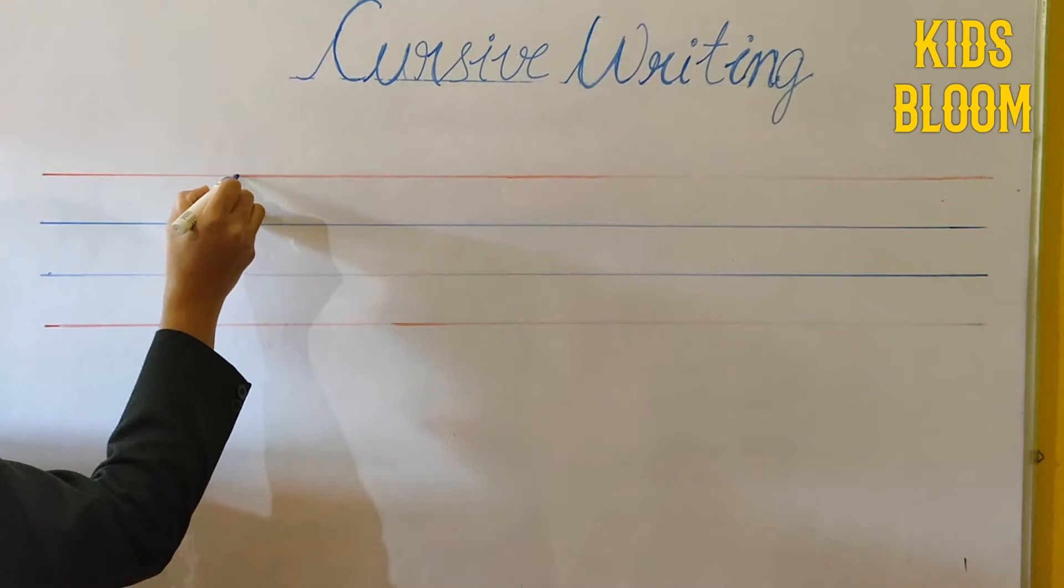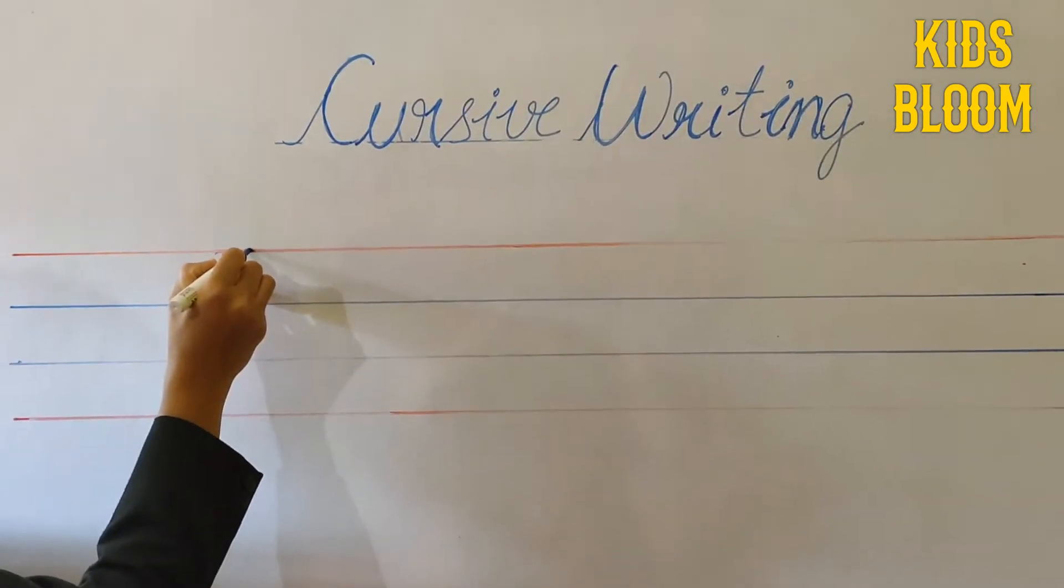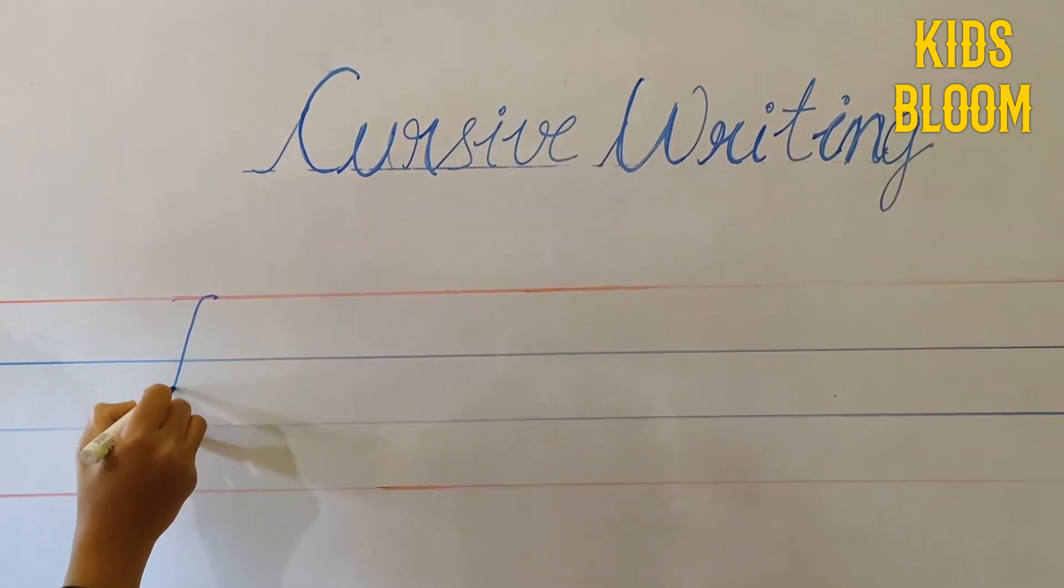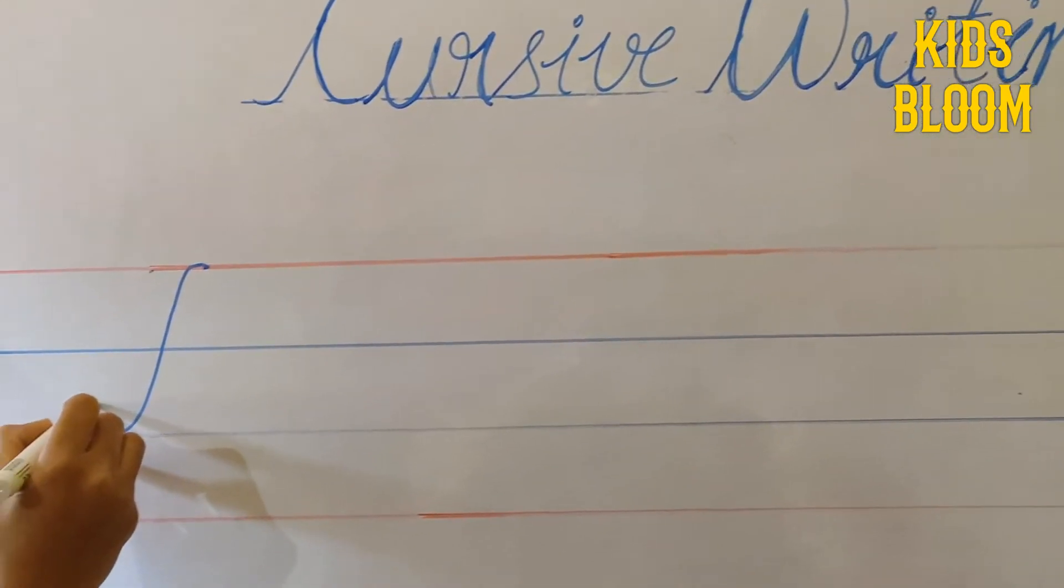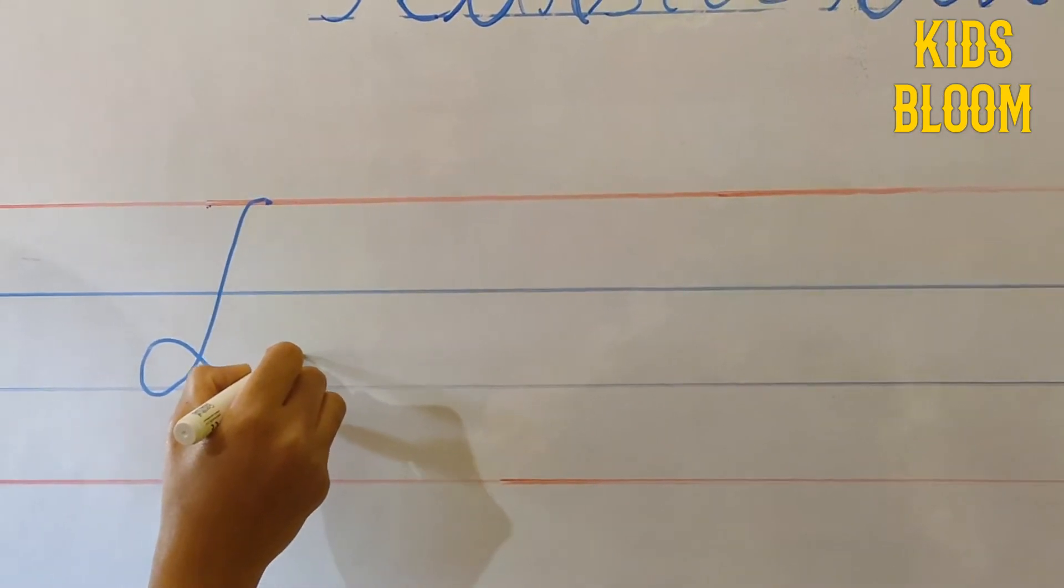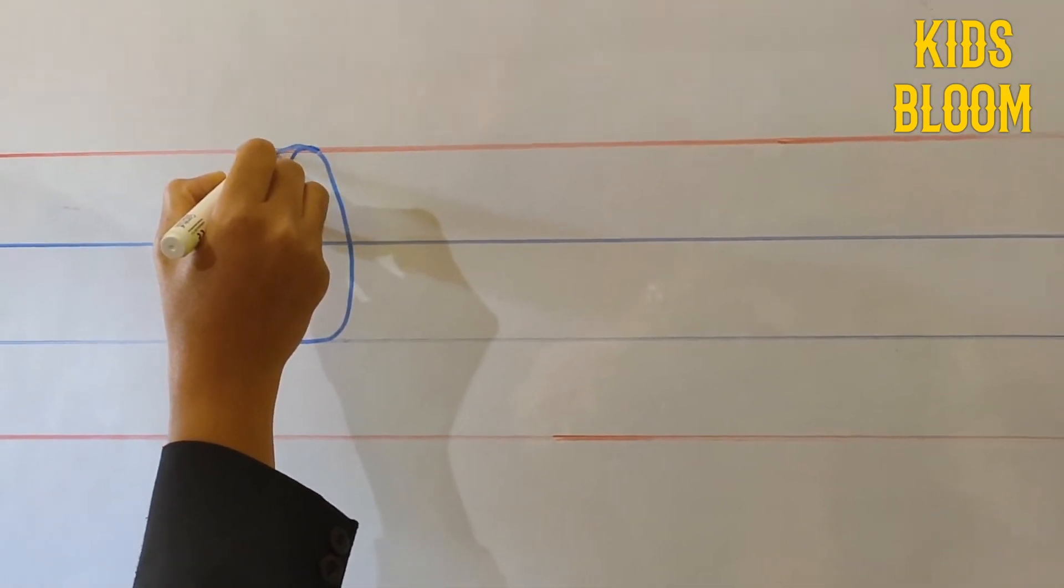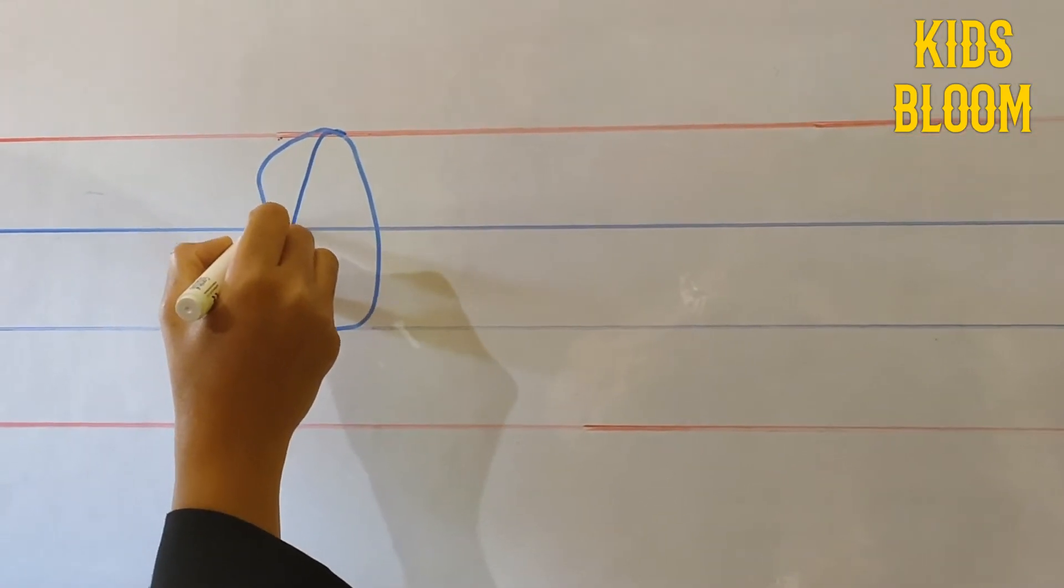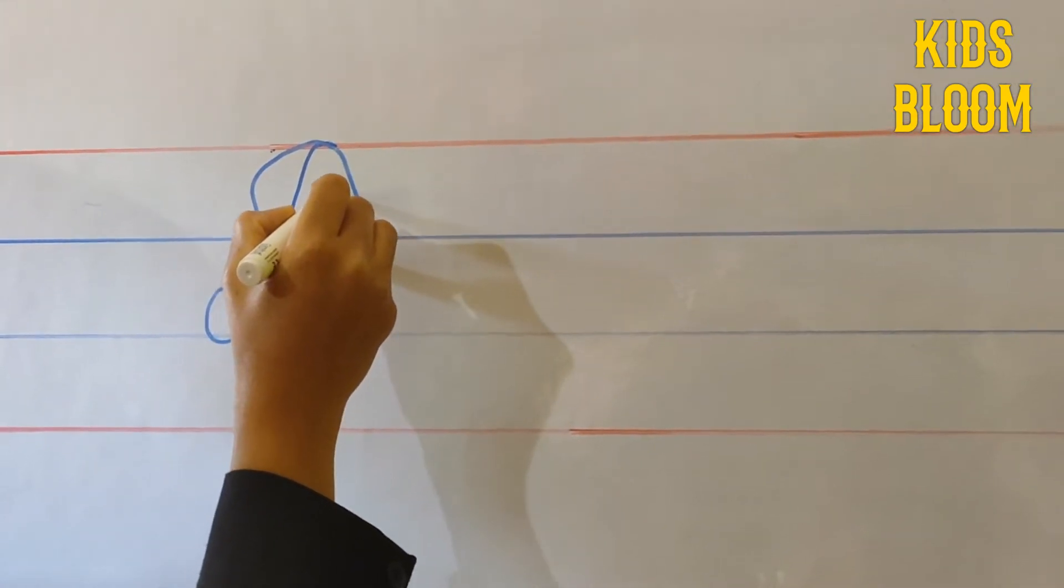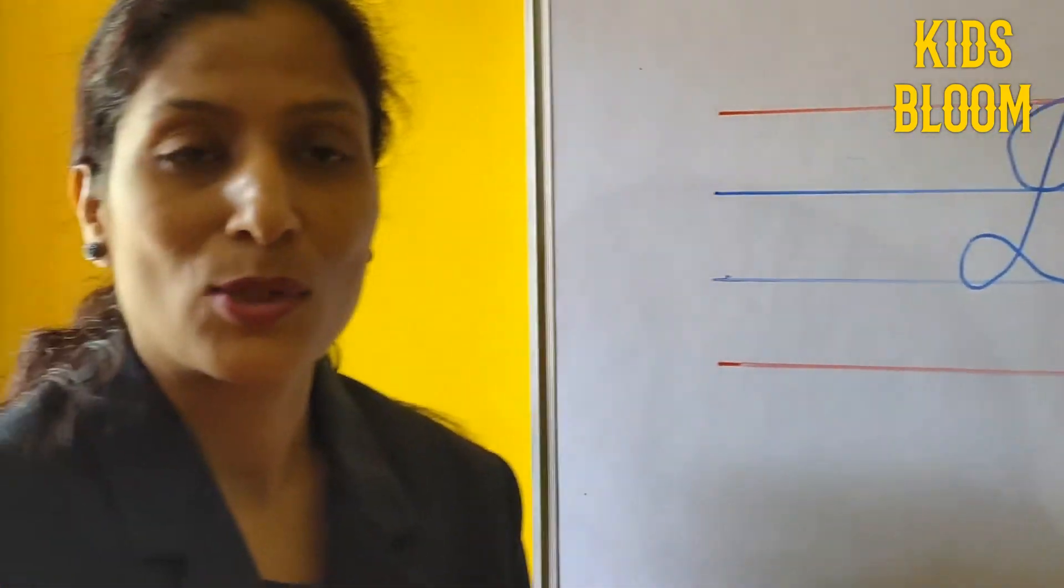Keep your pencil on the red line. Now drag the pencil to the third line. Make a small circle and again draw the line and turn this curve, and again make a curve and turn the second line and finish it here. This becomes a cursive D.